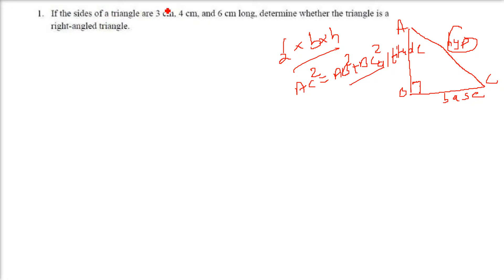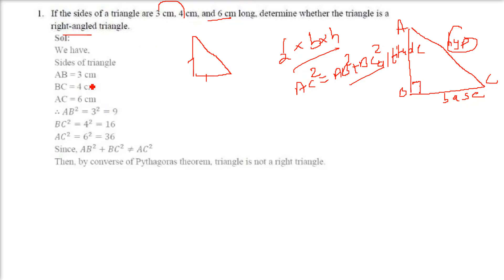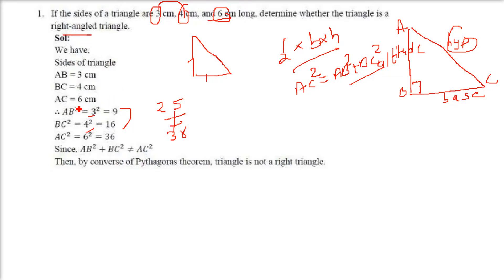If the sides of the triangle are 3, 4, 6 — determine whether the triangle is a right angle triangle. One thing we need to understand is that in a triangle, the sum of two sides will always be greater than the other side. We will apply Pythagoras theorem: 3 square plus 4 square is 9 plus 16, that is 25. The square of the third side is 6 squared, which is 36. Since 25 is not equal to 36, this is not a right angled triangle.